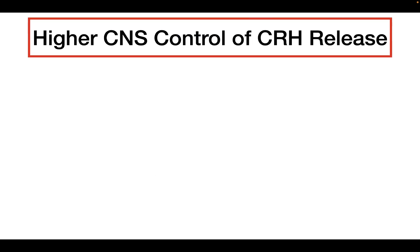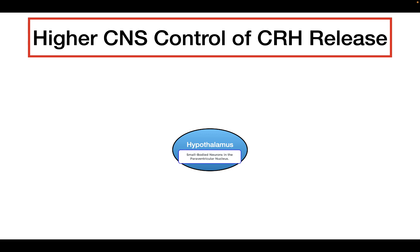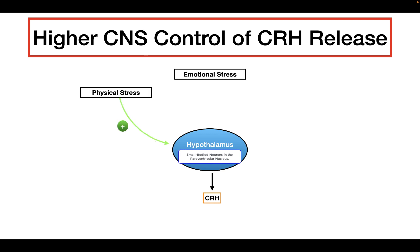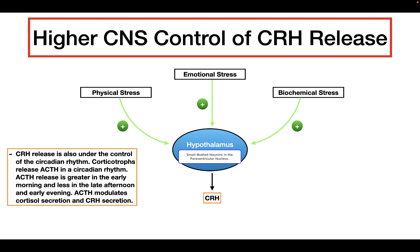The last topic is how the higher central nervous system can affect CRH release. Three main things stimulate the hypothalamus to release CRH: physical stressors, emotional stressors, and biochemical stressors. In addition, CRH release is modulated by the circadian rhythm. Corticotrophs release ACTH in a circadian rhythm — ACTH tends to be greater in the early morning and decreases in the late afternoon and early evening.